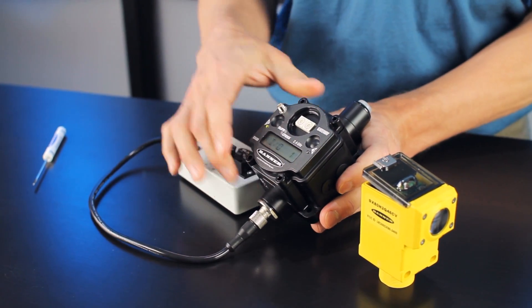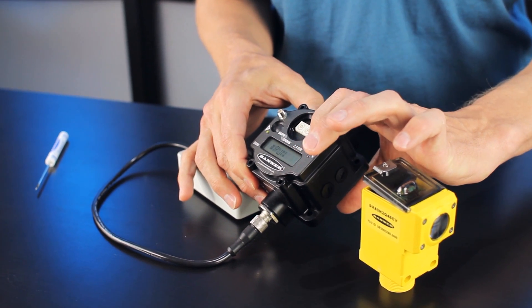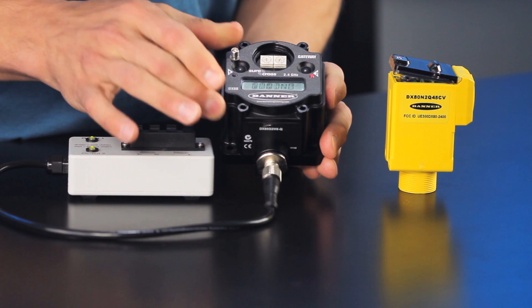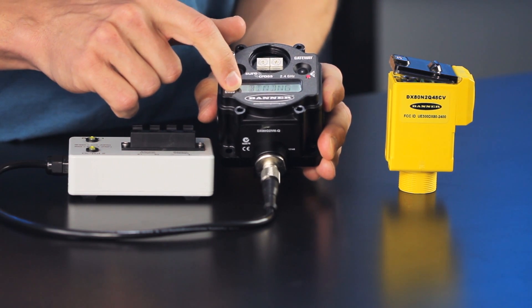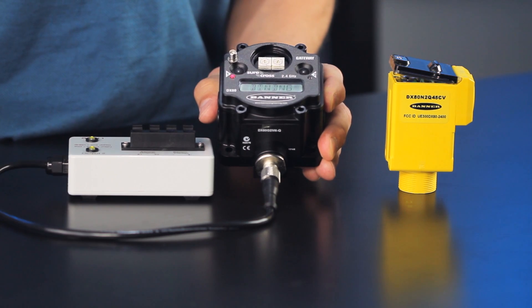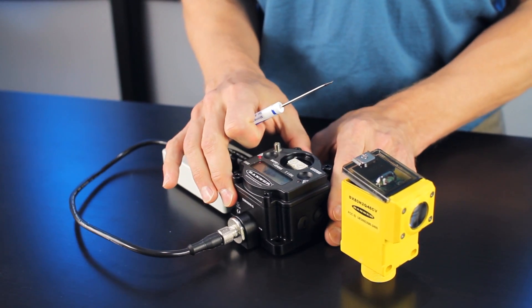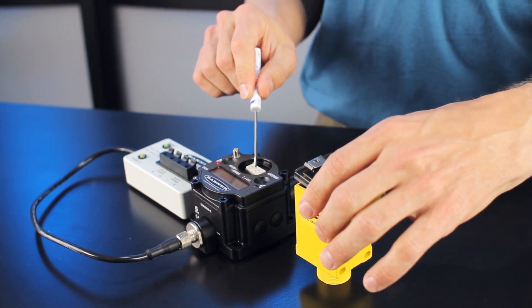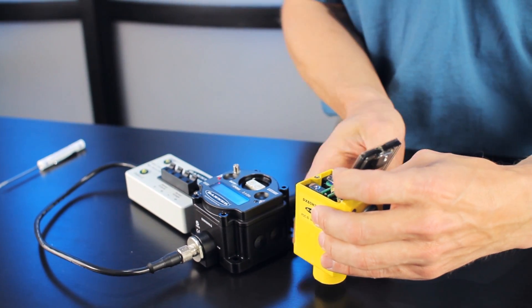Once the gateway is powered up, the next step is to enter binding mode by simply triple-clicking button 2. Once you enter binding mode, the LCD will say binding and the node address, here it says node address 1. So the node address 1 will be sent to the sensor when the sensor enters binding mode.